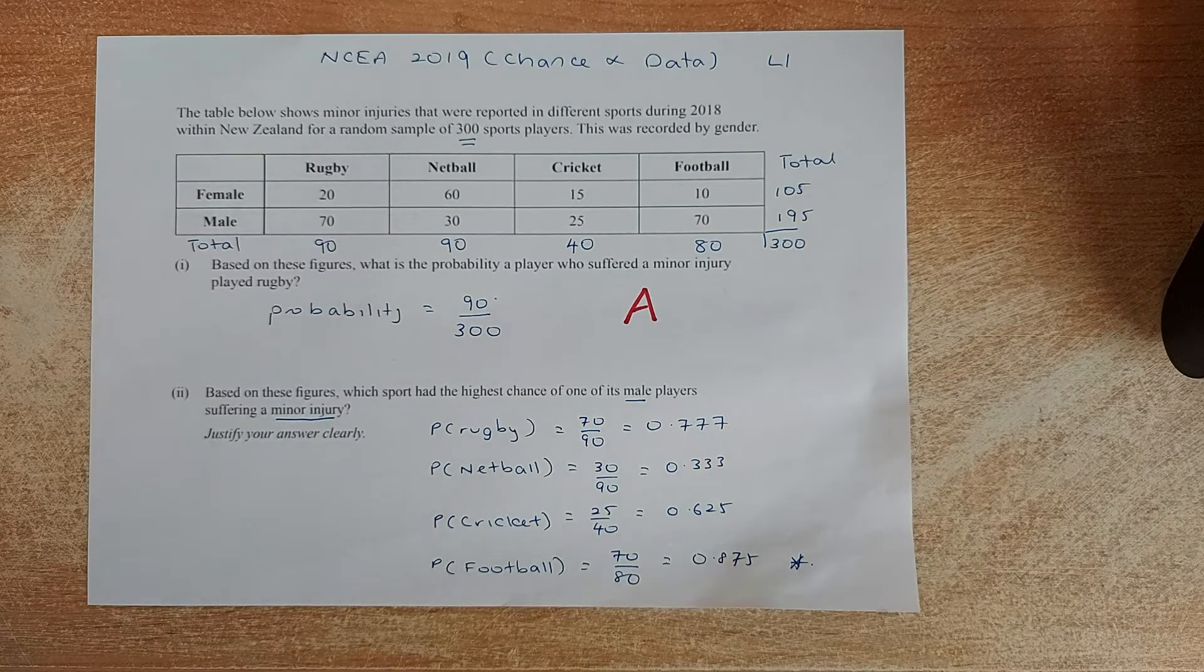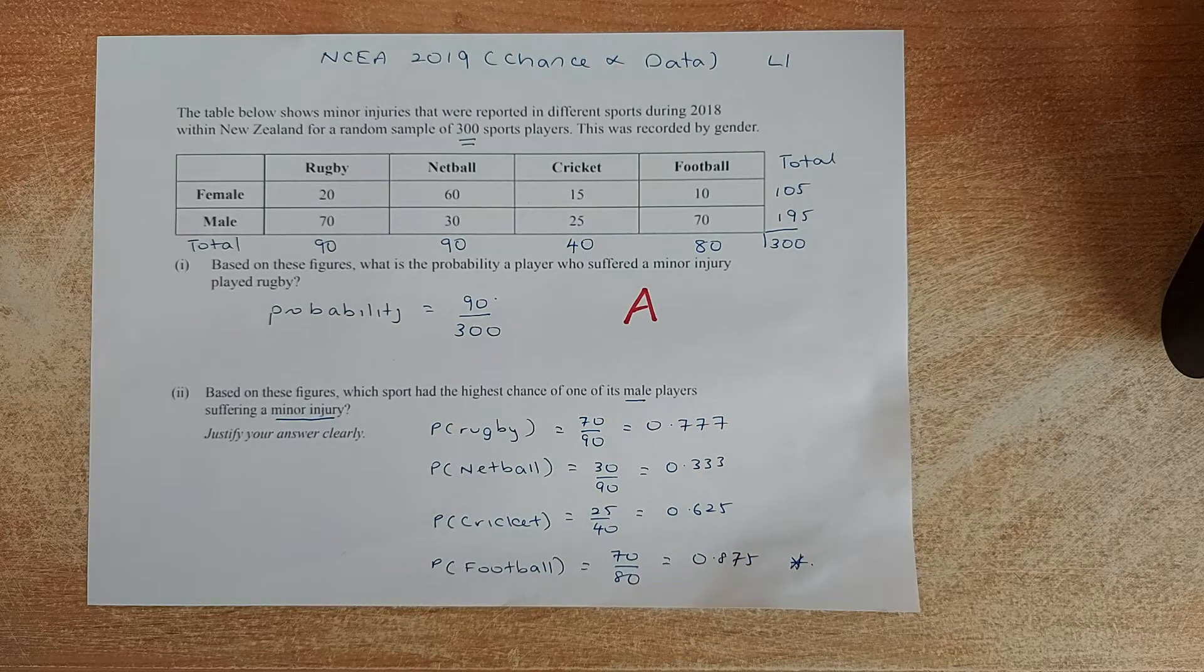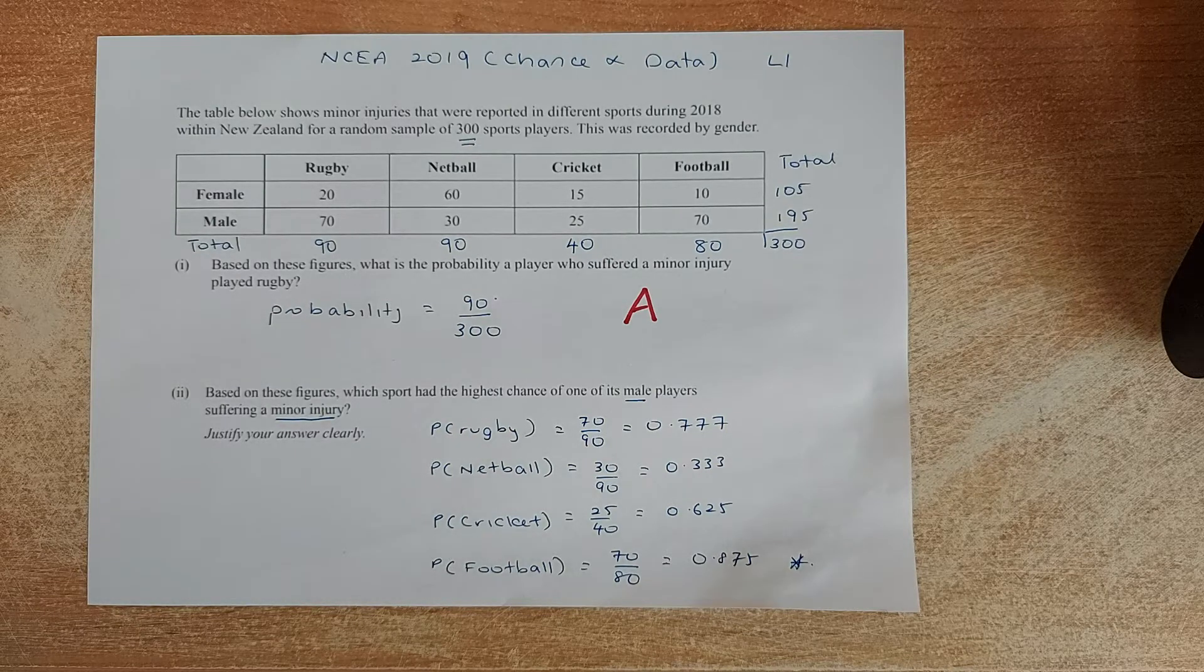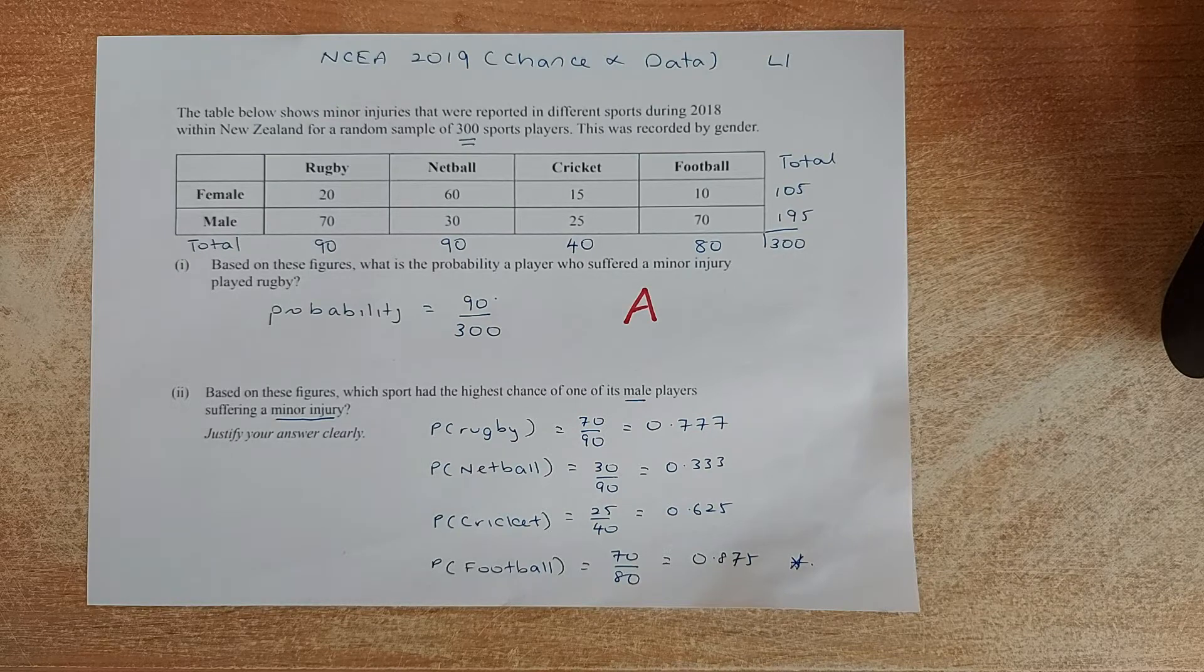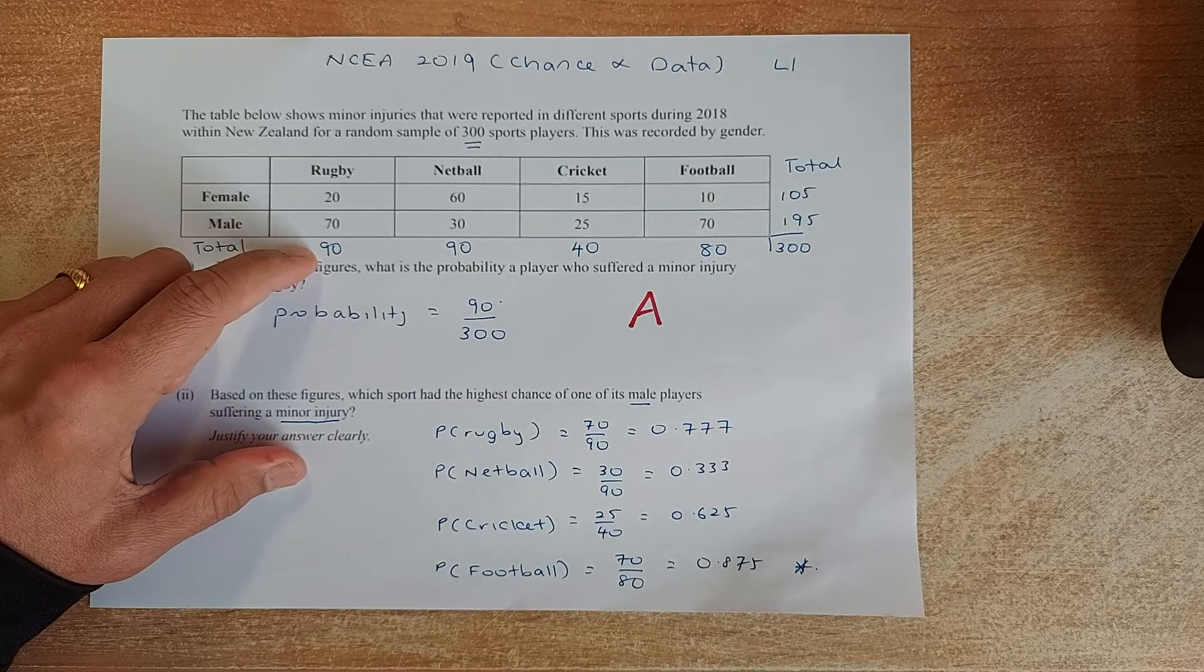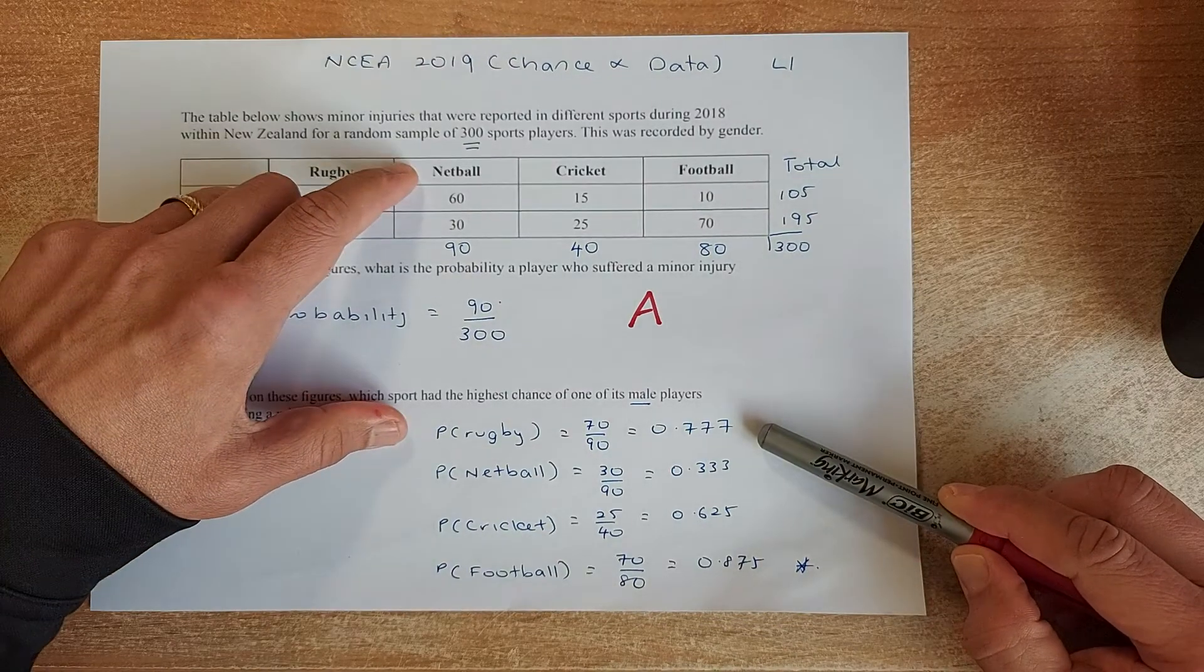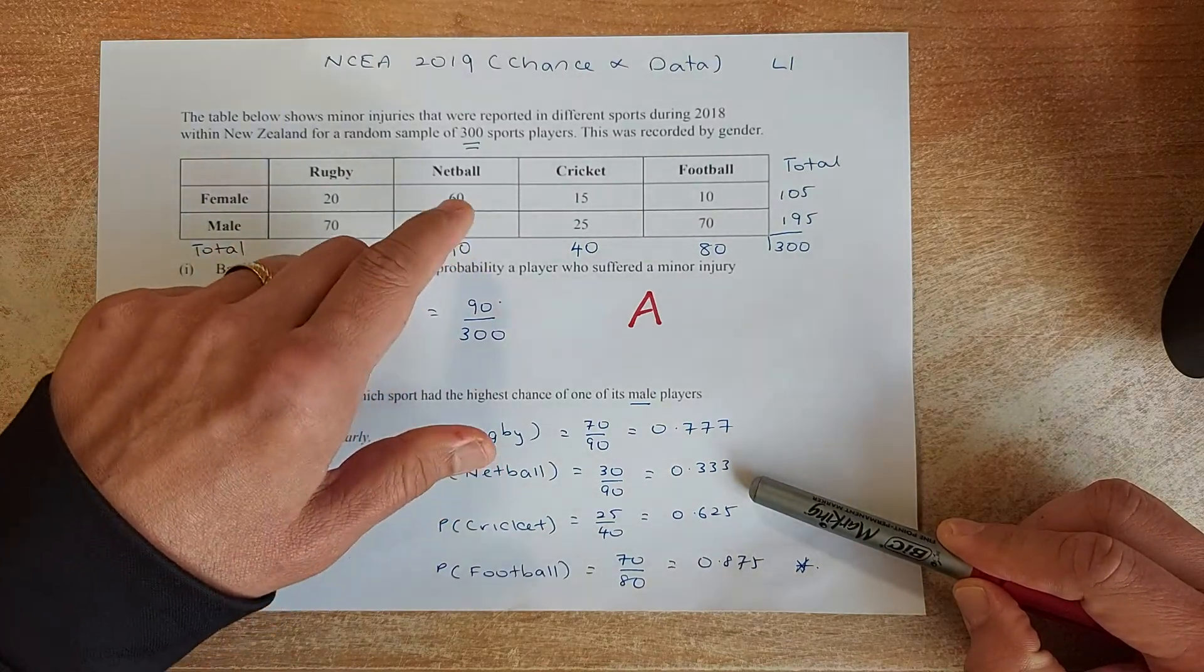Okay, so the second question, part 2. Based on this figure, which sport had the highest chance of one of its male players suffering an injury. So very simple. So for rugby, for the male players, it will be 70 out of 90. So they give you 0.777. For netball, it's 30 out of 90, so it gives you 0.333. We're looking at the male.